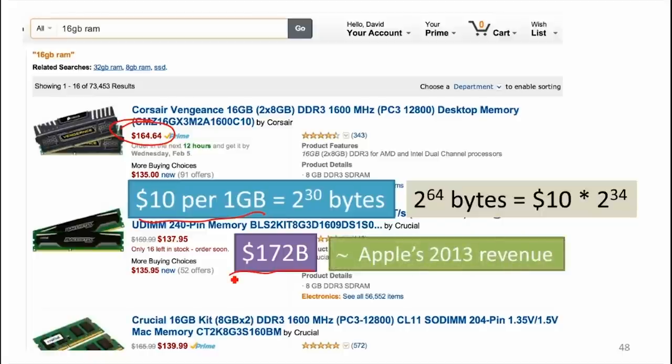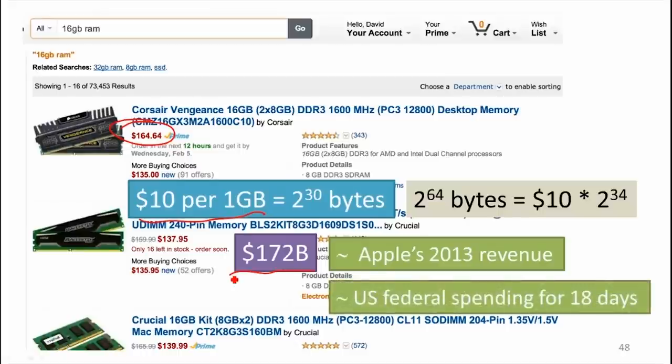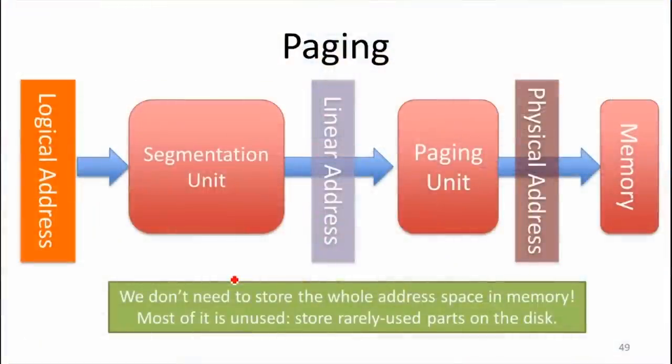The only people that can realistically think about having that amount of memory are the NSA. So if you're the federal government, that's about 18 days of spending. So if you can think of something really useful to do with 2 to the 64 bytes of memory, you can probably get it in your budget if you're the NSA. Maybe not. Maybe even that's real money for them. But they're getting towards things that are not that far from that. You can't afford to have enough memory for all that, but we need to provide that address space to program. So how do we do it? If you aren't as rich as Apple to be able to afford that much RAM, where do you store things?